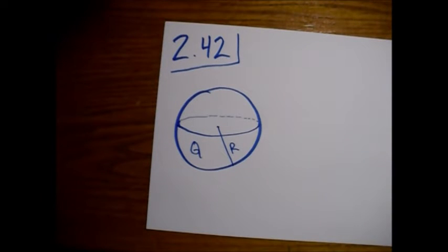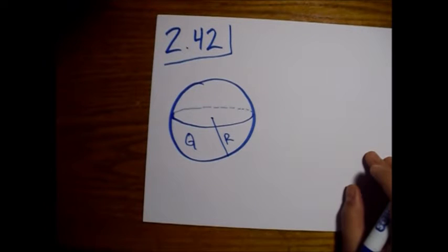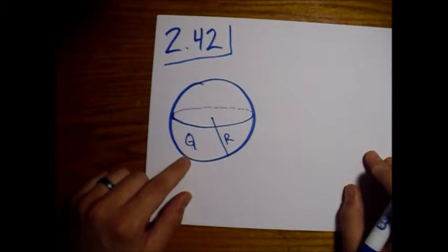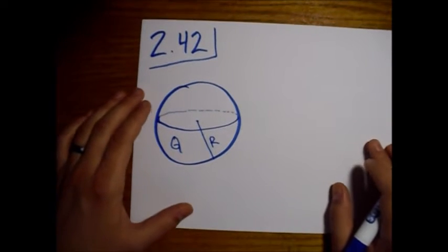All right, so Griffith's Electrodynamics, problem 2.42. A metal sphere of radius R carries a total charge of Q. What is the force of repulsion between the northern hemisphere and the southern hemisphere?